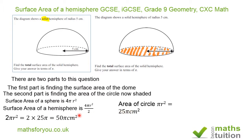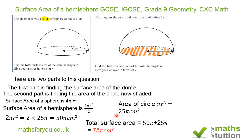We now have to add both the surface area of the hemisphere and the area of the circle. When we add both, we get 75π centimetres squared. And that's the answer we expect.